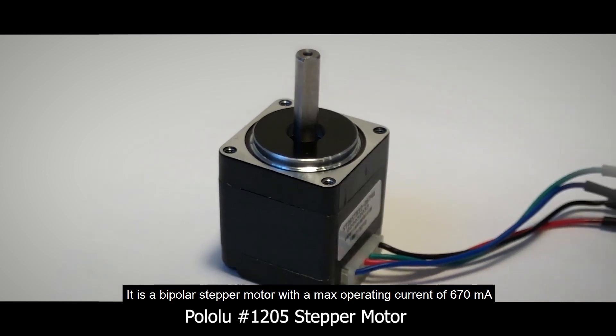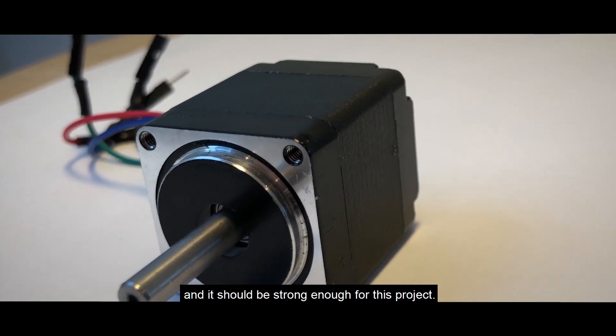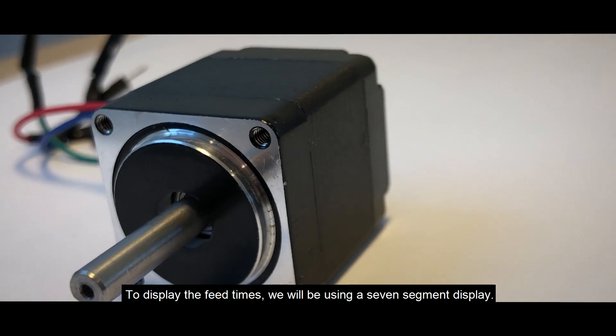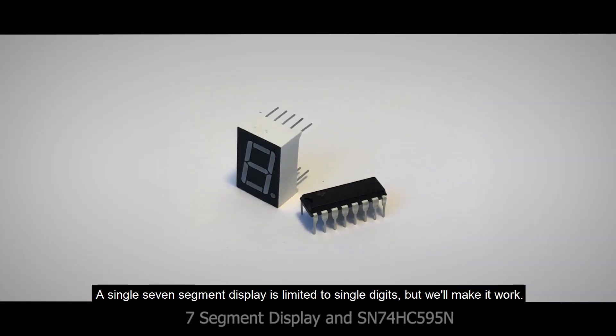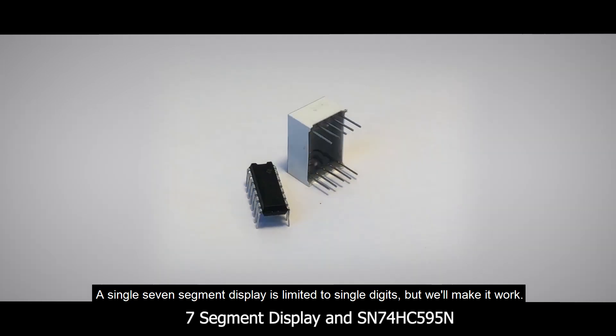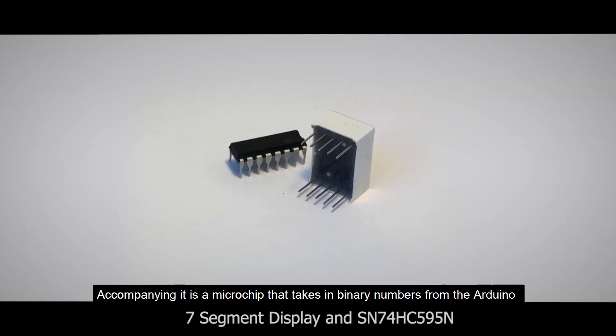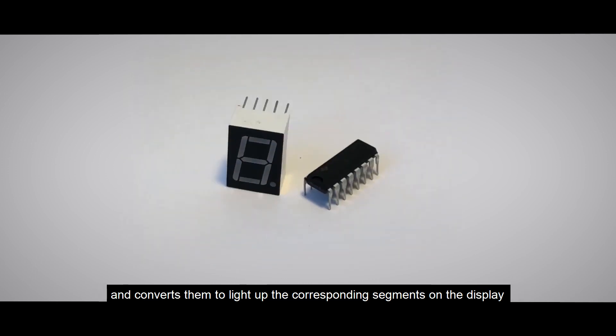To display the feed times, we will be using a seven-segment display. A single seven-segment display is limited to single digits, but will make it work. Accompanying it is a microchip that takes in binary numbers from the Arduino and converts them to light up the corresponding segments on the display to show what the user requested.